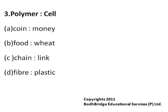Polymer is to Cell. The options are: Coin is to Money, Food is to Wheat, Chain is to Link, and Fiber is to Plastic. A Polymer is a chemical compound that has a structure of large molecules. A Cell is the smallest part of a living thing that can exist independently. A similar relationship exists between Chain and Link. Hence the correct answer is Chain is to Link.